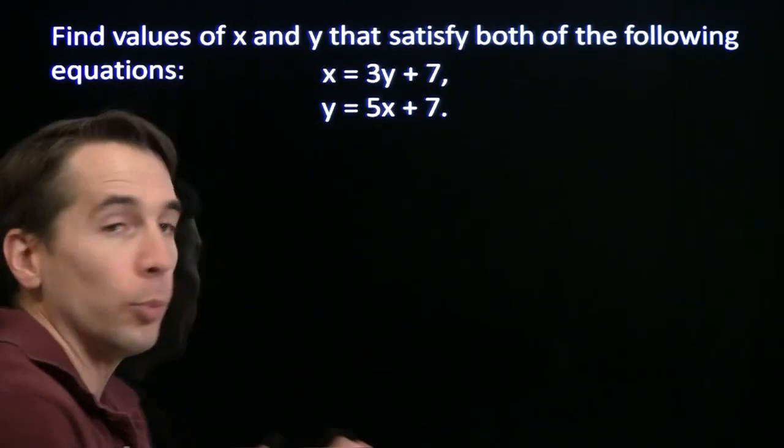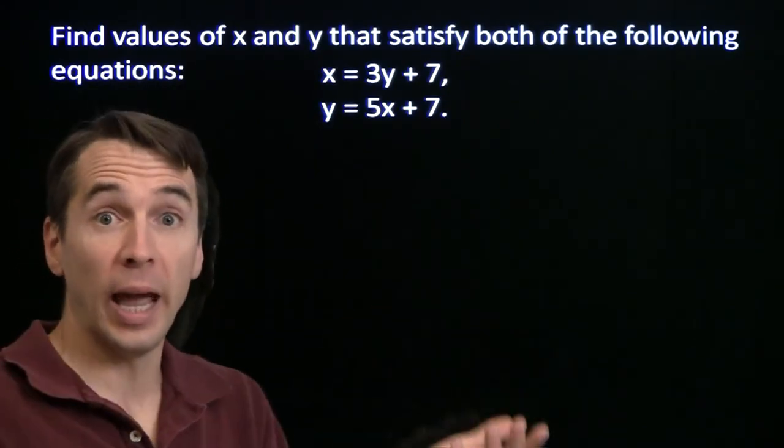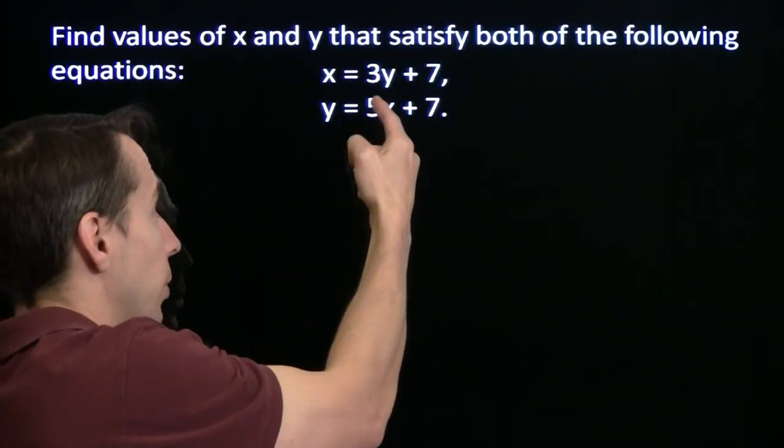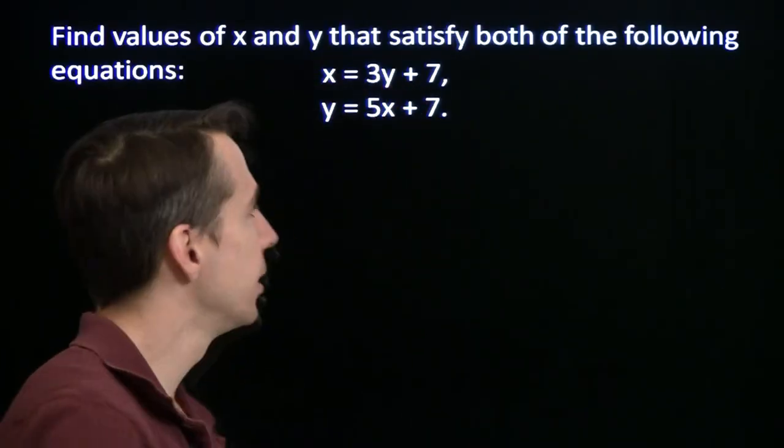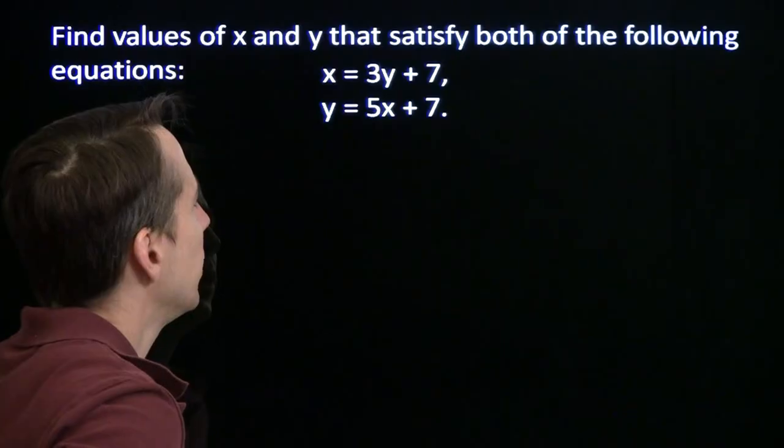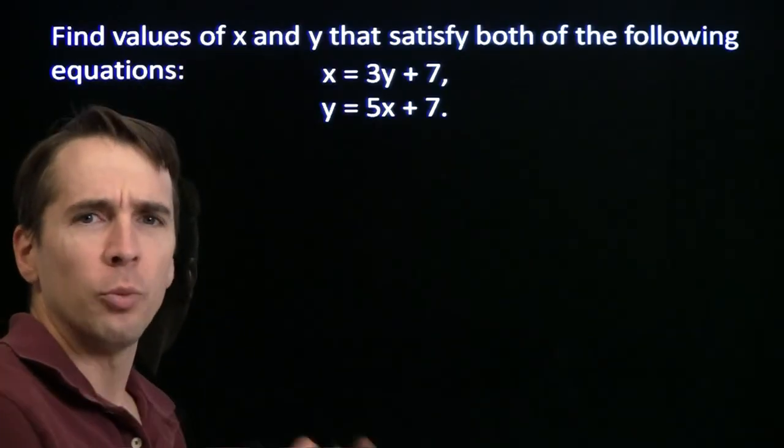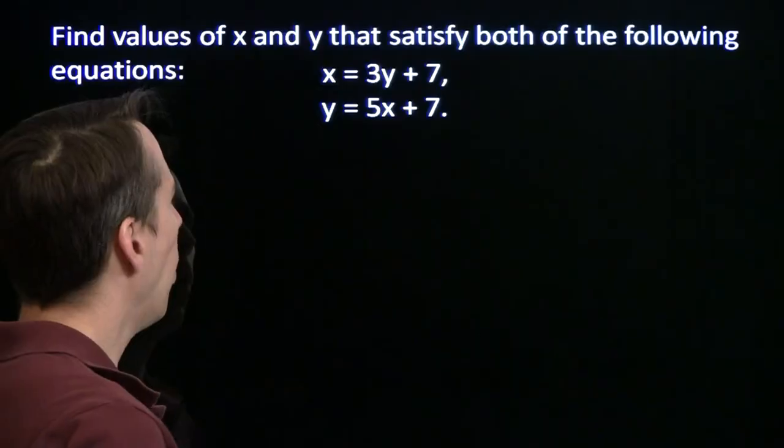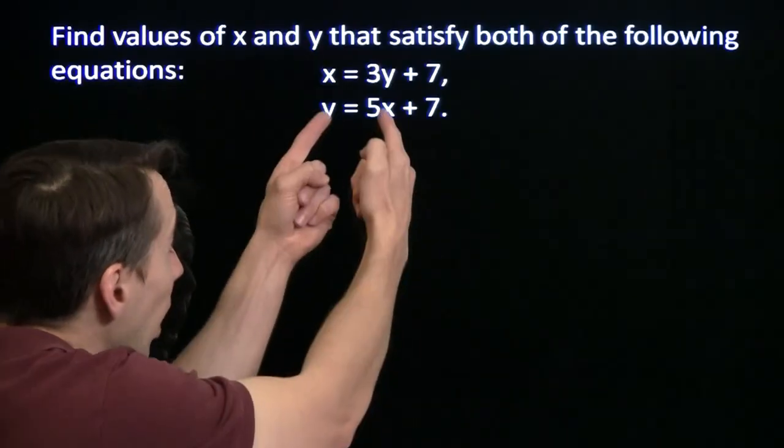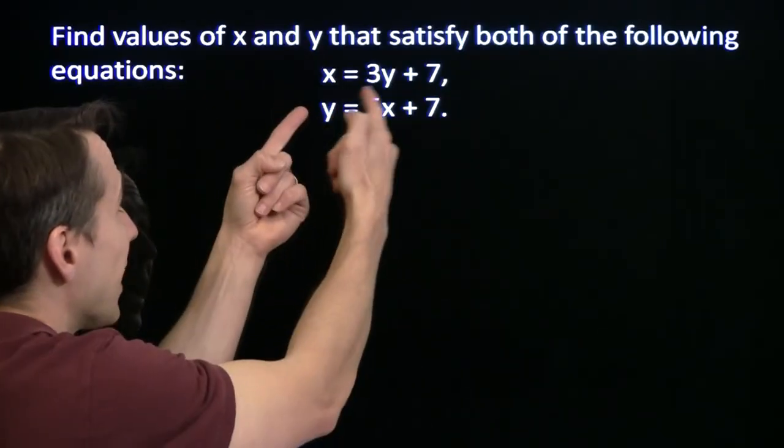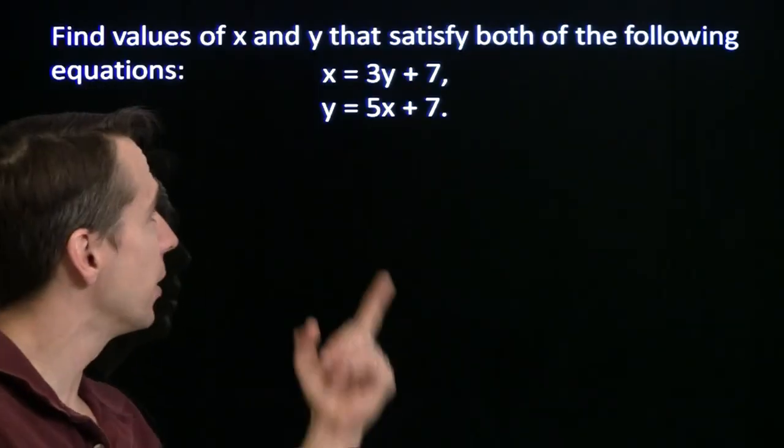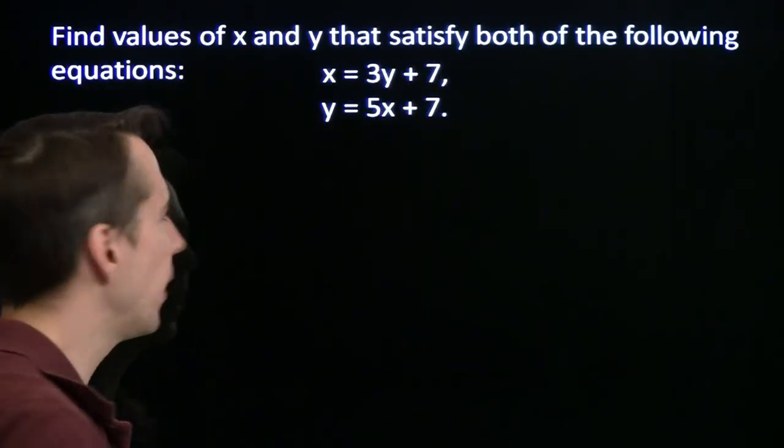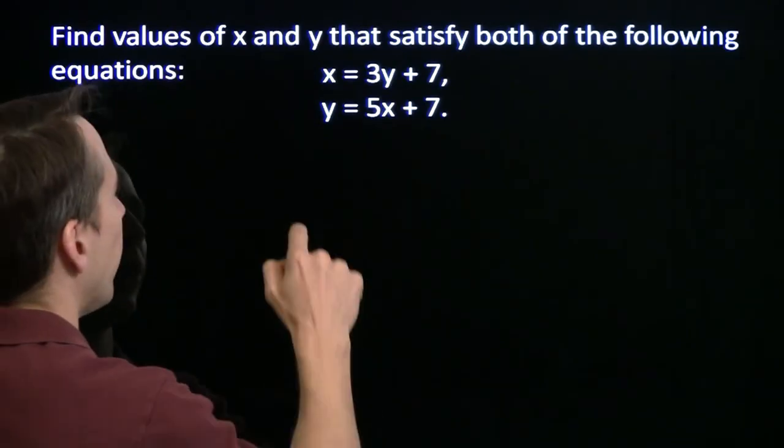Now, if we could figure out one of them, we could easily quickly get the other one. If we had a value for x, we could put it right in there and instantly get y. If we had y, we could put it right in there and instantly get x. But we don't have either one of them. So we don't have a number that we can just put in here for x to get y. But we do have a whole expression here. We do know that x is 3y plus 7. So we can take this whole expression and put it right in there for x. Let's see what that'll do for us.